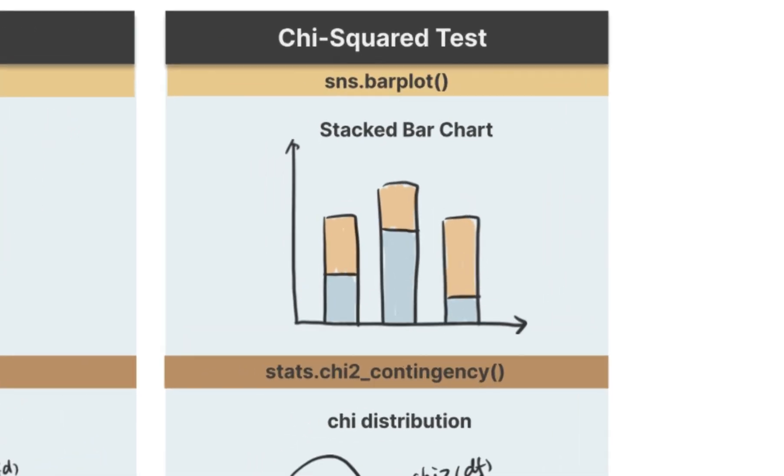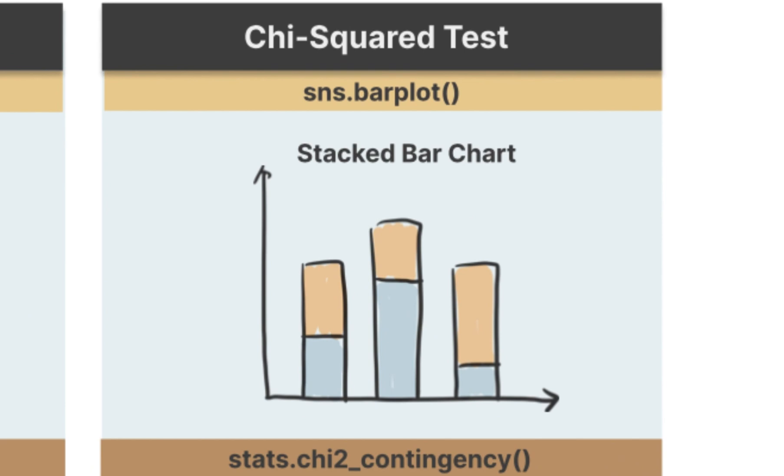The underlying principle is that if two categorical variables are independent, then one categorical variable should have similar composition when the other categorical variable changes. Stacked bar chart is a great visual tool to examine the data set before carrying out chi-squared test. If these two variables are completely independent to each other, or in other words, null hypothesis is true, then the proportion of orange and blue area should be the same across all groups. On the other hand, if the proportion is not consistent, it may suggest that dependencies exist.